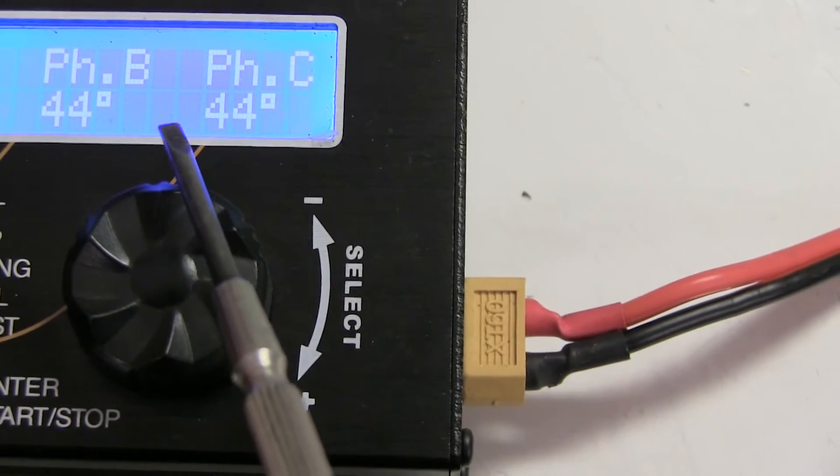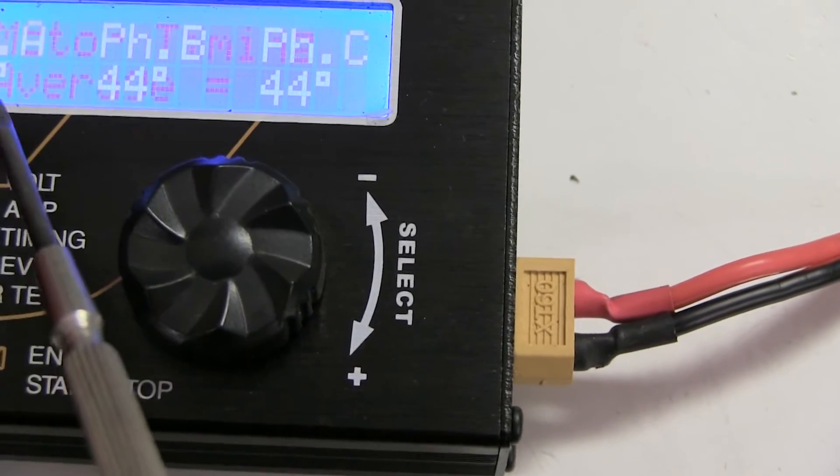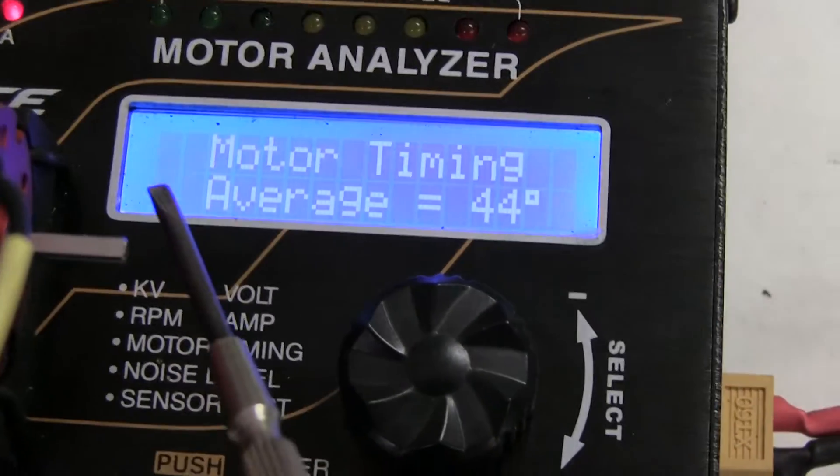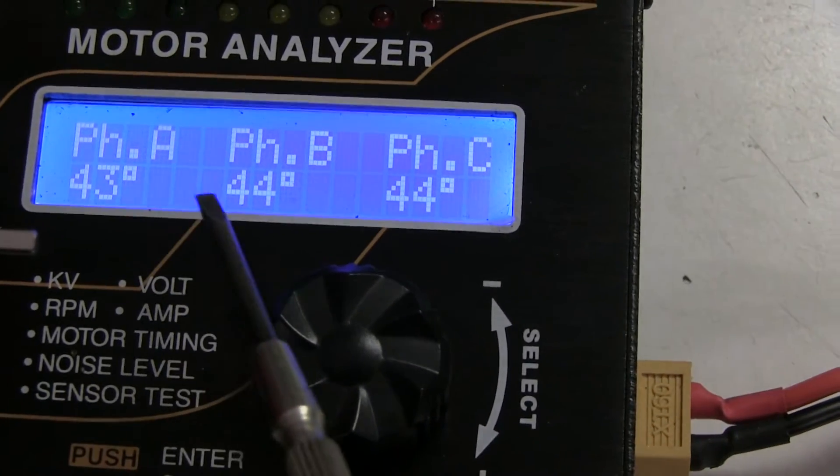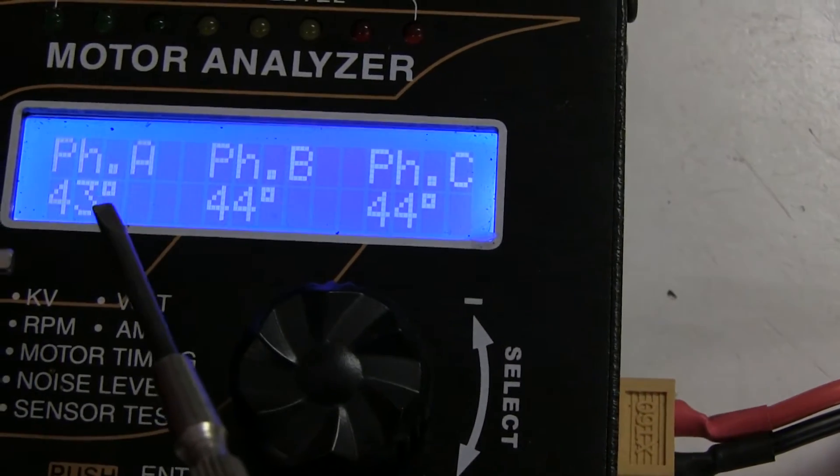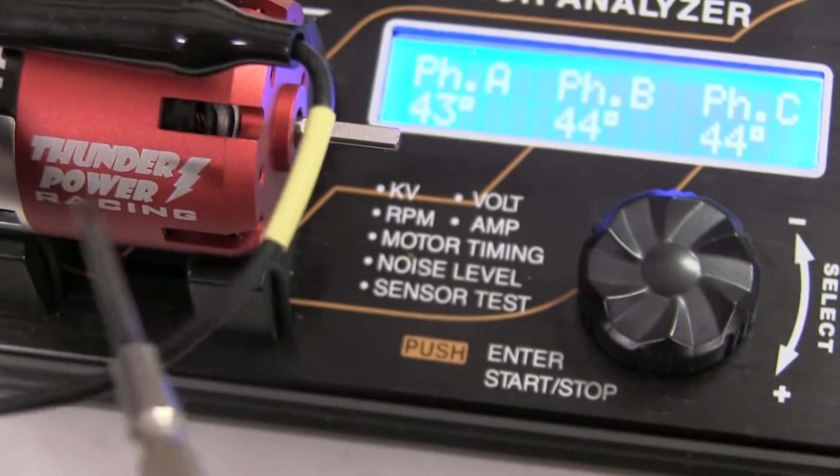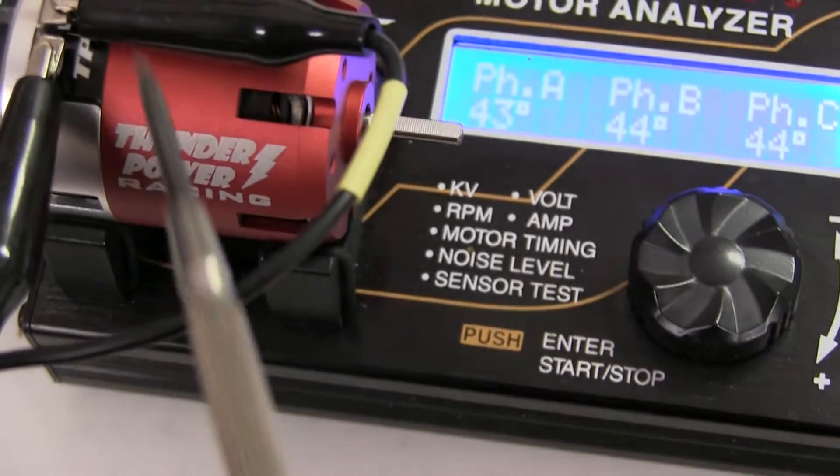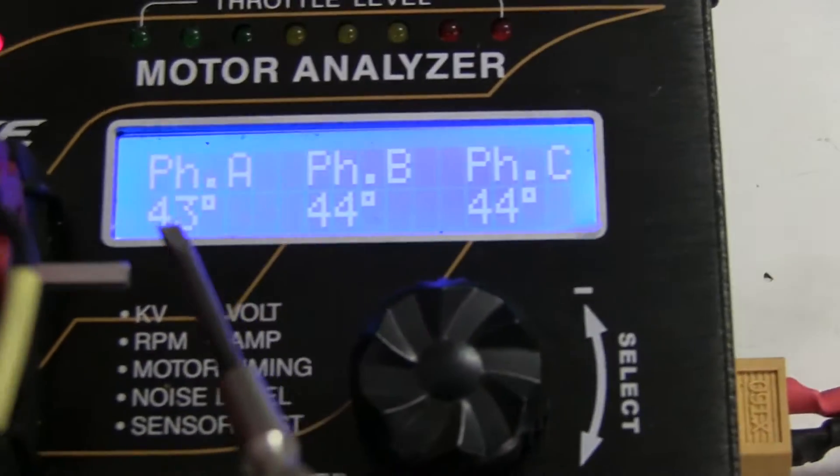This one's a good one: 44, 44, 43. A perfect result would be all exactly the same but that is pretty close. And I find that these Thunder Powers and similar manufactured motors do give a good sensor board reading.